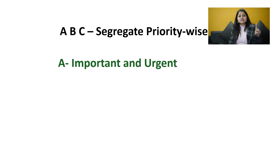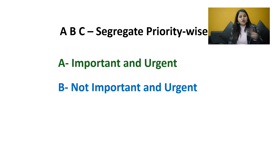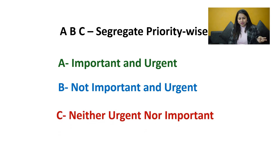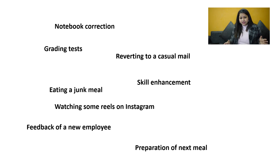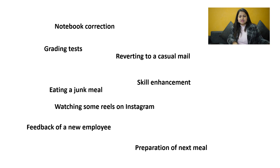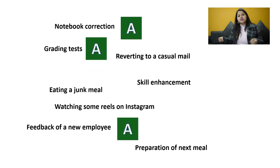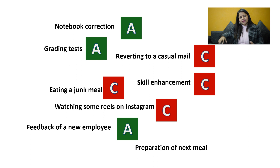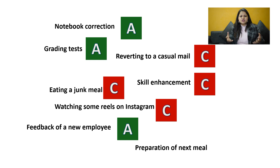So when there are many small tasks, the ABC technique says: A is urgent and important, B is urgent and not important, C is neither urgent nor important. When you have your list of tasks, you quickly write A, B, or C next to each one. For example, lesson planning is urgent and important, so it gets an A. Reverting to an email with a deadline next month gets a C because it's neither urgent nor important right now — I can handle it next week. Something urgent but not important gets a B.